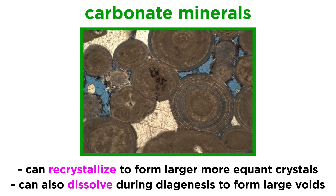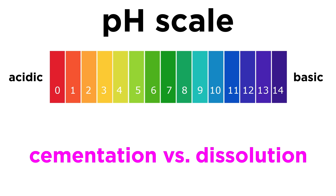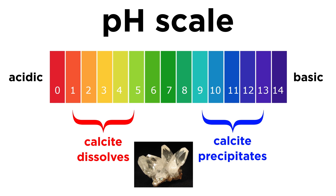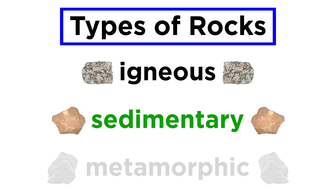Being one of the more soluble mineral groups, the carbonates can also dissolve during diagenesis, forming large voids. Whether cementation or dissolution occurs depends on the chemistry of the sediment's pore water. For example, calcite tends to dissolve under acidic conditions and precipitate when the pH is higher. That covers the mineralogy of sedimentary rocks, so let's move forward and get some information on their classification next.